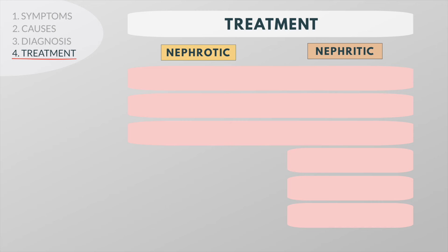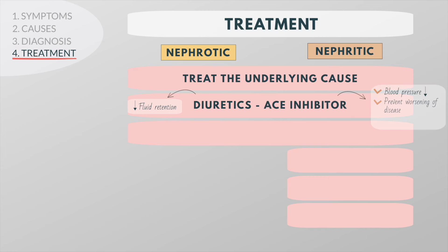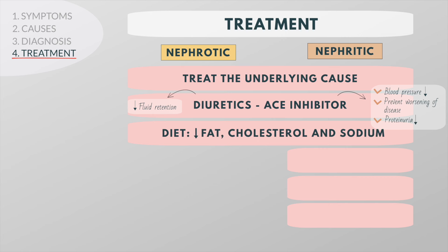The first-line treatment for both nephrotic and nephritic syndrome is to treat the underlying cause. In addition, almost all patients are given diuretics to reduce fluid retention and an ACE inhibitor to lower blood pressure, to prevent worsening of the disease, and to reduce the amount of protein excreted in the urine. General therapy includes a diet that contains low amounts of saturated fat, cholesterol, and sodium.